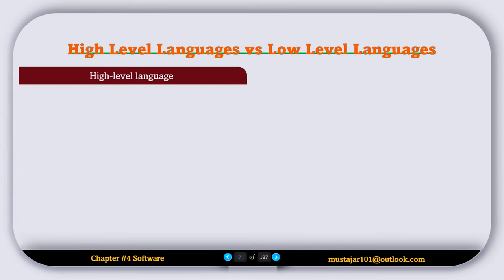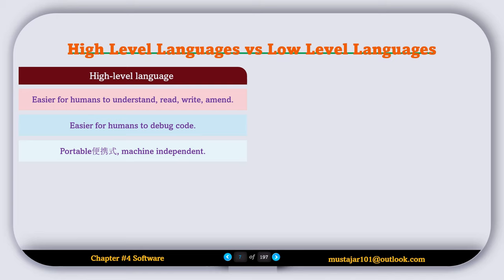Now let's compare high-level and low-level languages. High-level languages are easier for humans to understand, read, write, and amend. Easier for humans to debug code. Portable, machine independent. It must be converted into a low-level language before it can be run. One statement can represent many low-level instructions.